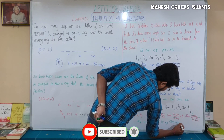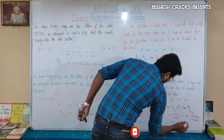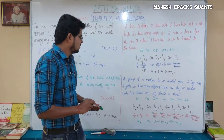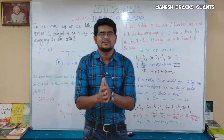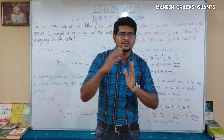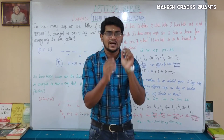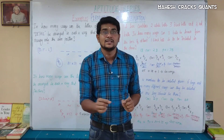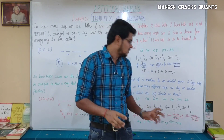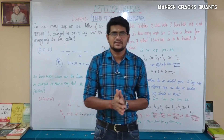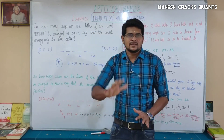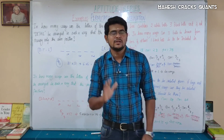So we can select 4 members from 6 boys and 4 girls with at least 1 boy in 209 ways. That's all the examples for today.